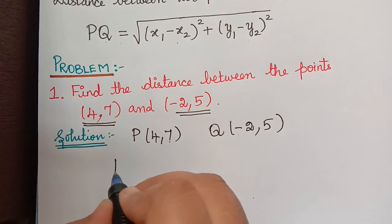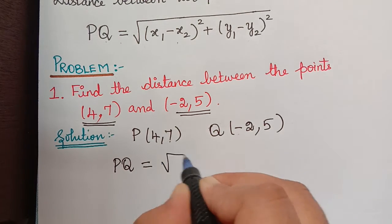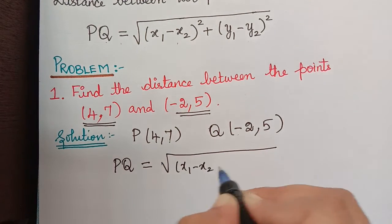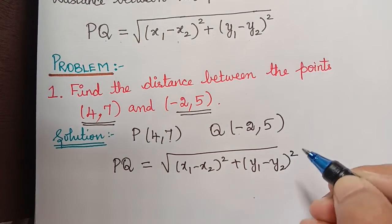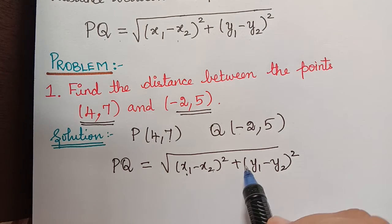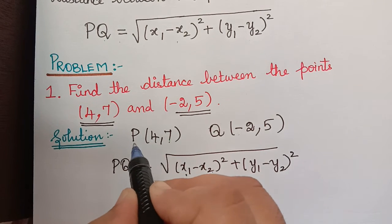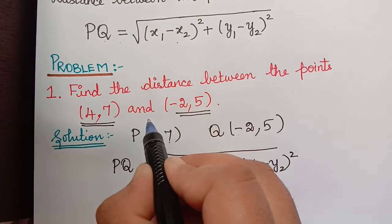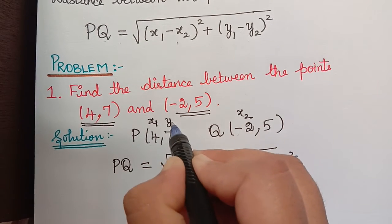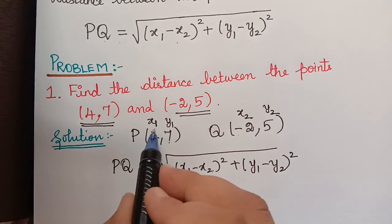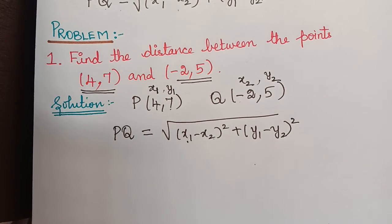So let us write the formula first. The distance PQ is equal to square root of (x1 minus x2) whole squared plus (y1 minus y2) whole squared. Now we shall substitute x1, x2, y1, y2. The x-coordinate of point P is x1, so x1 is 4, x2 is minus 2, y1 is 7, and y2 is 5.